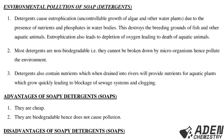Regarding environmental pollution caused by detergents: first, detergents cause eutrophication — uncontrollable growth of algae and other water plants — due to the presence of nutrients and phosphates in water bodies. This destroys breeding grounds of fish and other aquatic animals, and eutrophication also leads to depletion of oxygen causing death of aquatic animals. Second, most detergents are non-biodegradable, meaning they cannot be decomposed by microorganisms, and thus pollute the environment. Third, detergents contain nutrients which when drained into rivers cause aquatic plants to grow quickly, leading to blockage of sewage systems and clogging.